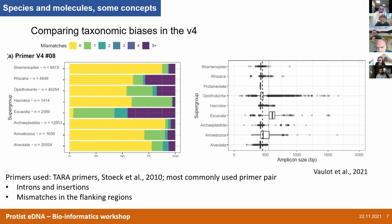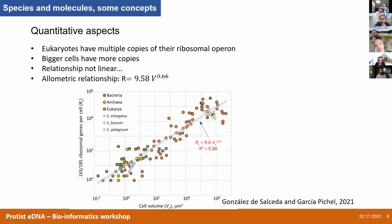It can also be a matter of amplicon size — if the amplicon size is too large, you don't get the group or don't get the sequences. I give this example not because these primers are bad — I think they're a good primer pair — but because this is one of the most used primer pairs for environmental DNA surveys. And then we must talk about the quantitative aspects.